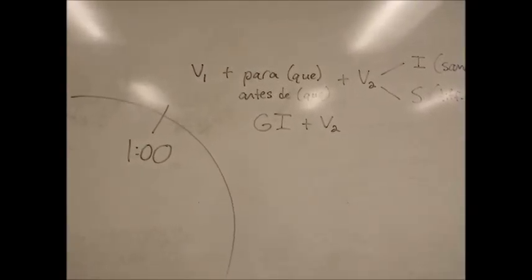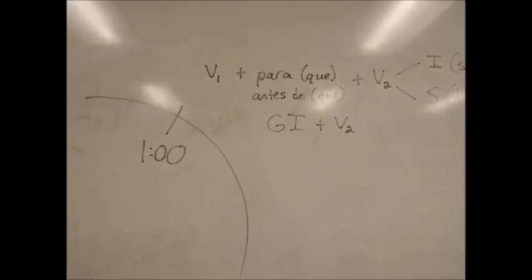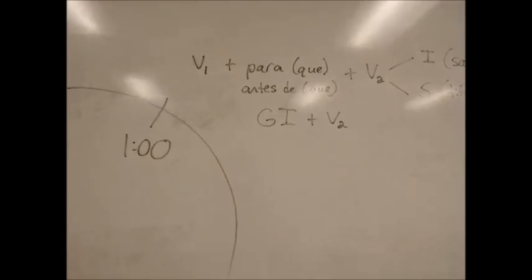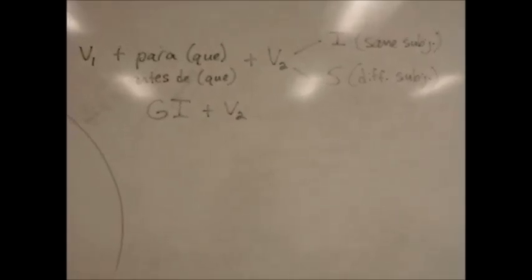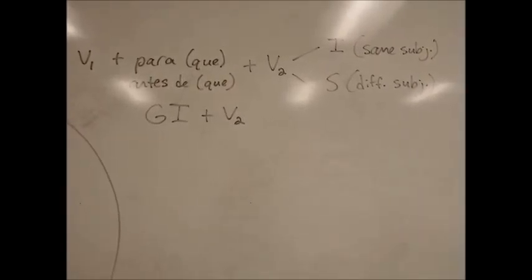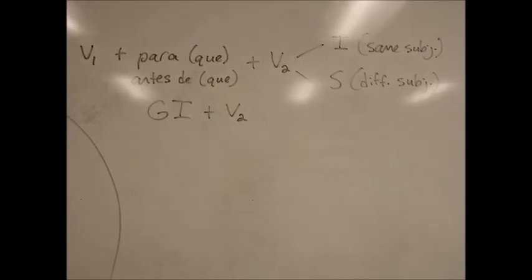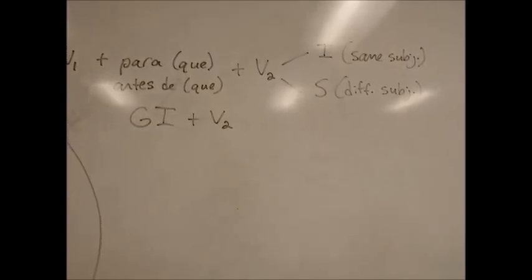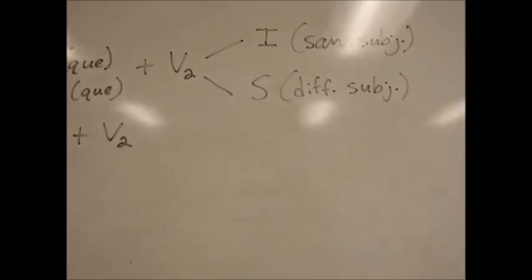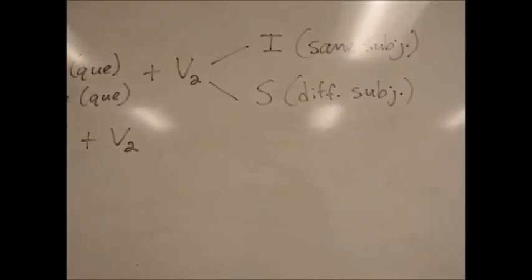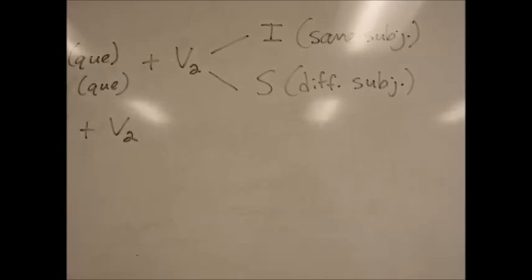Now I'm going to throw some more at you. The full rules for one o'clock look like this. We have a V1 and then para or antes de, and then a V2. But V2 has two options. It can either be in the infinitive or the subjunctive. That's what I or S stands for. It stays in the infinitive if the subject is the same in both parts of the sentence, and changes to the subjunctive if the subject in the second part is different.